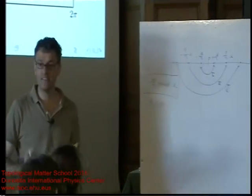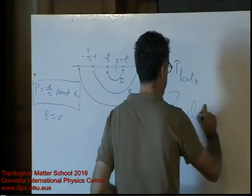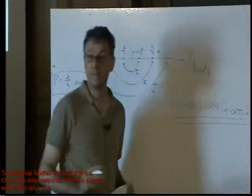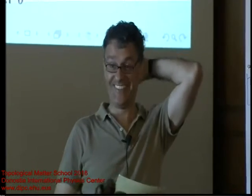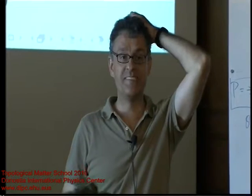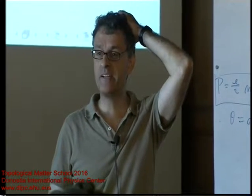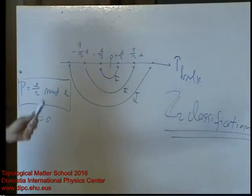On the basis of the polarization, we can classify all inversion-symmetric insulators in one dimension into two classes: those that have polarization 0 mod e, and those that have polarization e over 2 mod e. The SSH model was in class A3 in that table from yesterday afternoon, but that table was for anti-unitary symmetries. Inversion is a unitary symmetry, so this classification is not part of that table — there is no contradiction.